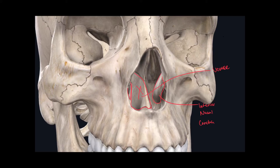The vomer actually articulates with the perpendicular plate of the ethmoid bone, which is an anatomical feature we learned in the last video. So the vomer is just inferior to the perpendicular plate of the ethmoid bone. If we step out of the nasal cavity and go superior to it, there's a set of bones right here — this pair — and these are your nasal bones.